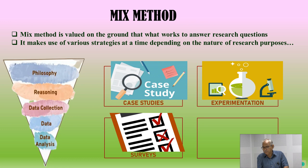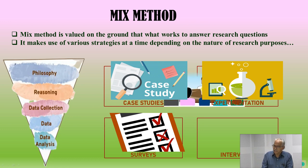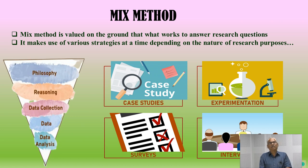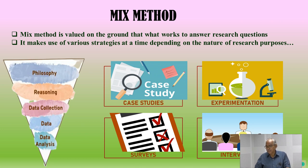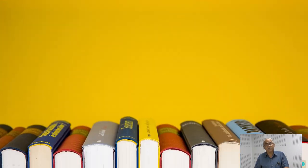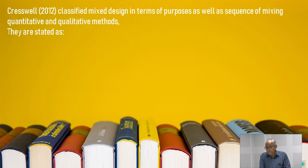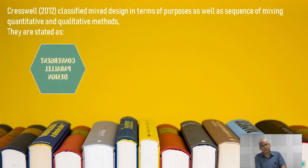There are different types of mixed method approaches. One is convergent parallel design, where quantitative and qualitative methods are adopted simultaneously in parallel form, and at the end the results of both studies are fused together to arrive at a conclusion. The second category is explanatory sequential design, where experiments are conducted and followed by qualitative interpretations of the quantitative studies.